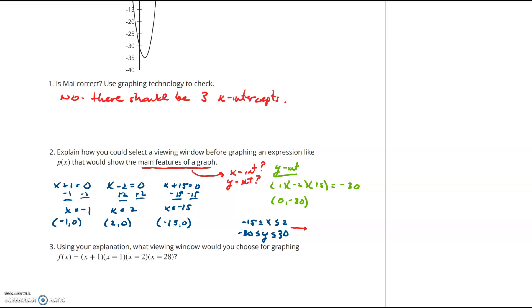What I want to do is I want to make my window a little bit bigger than both of these. So I want to go a little bit further than negative 15. Let's call it negative 20. I want to go a little bit bigger than positive 2. Let's call it positive 5. I want to go a little bit smaller than negative 30. Let's call it negative 40. A little bit larger than positive 30. Let's call it positive 40. And let's see if we use this window if our graph looks any better.